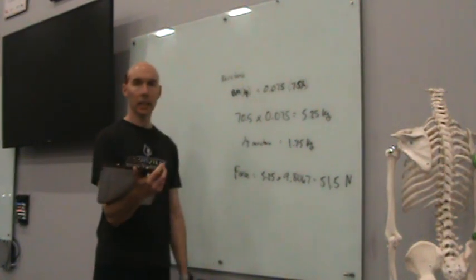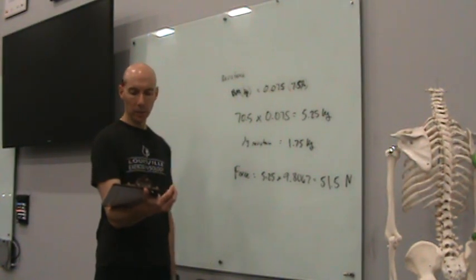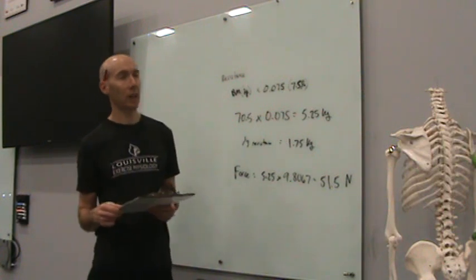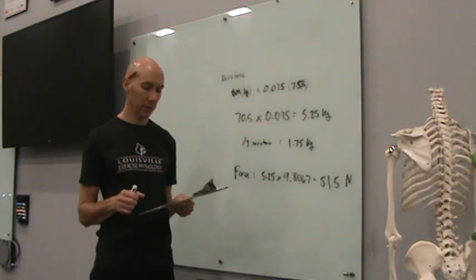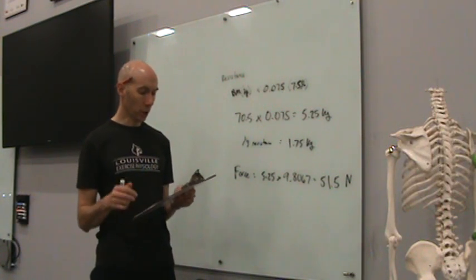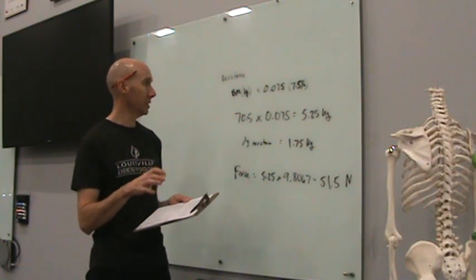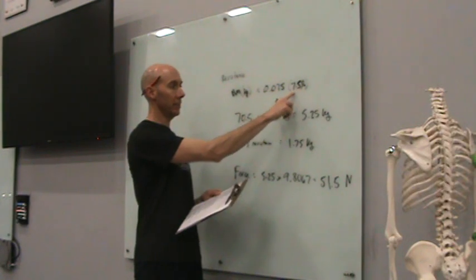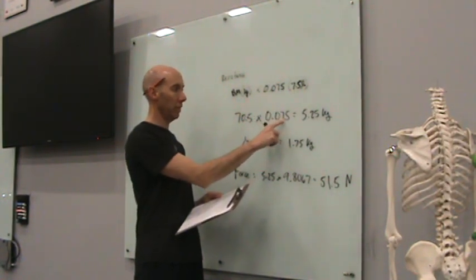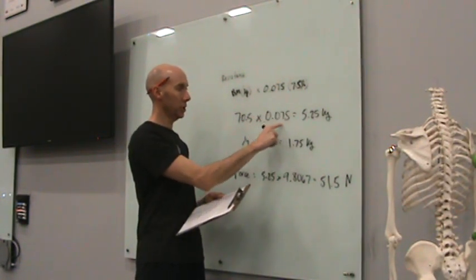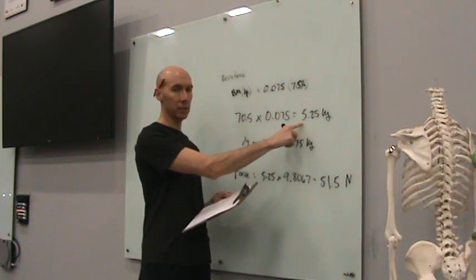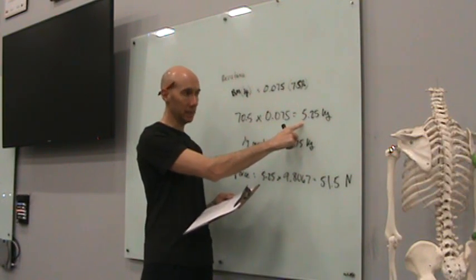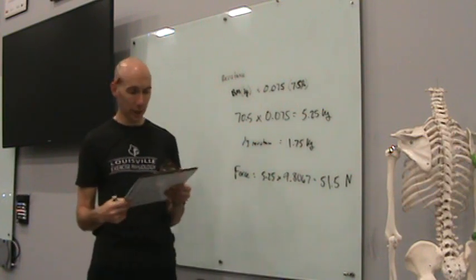Okay, so for the Wingate, again, Lindsay is going to be our subject. Her body weight is 70.5 kilograms, her height is 158 centimeters. So for the resistance, what we will do is take her body mass in kilograms and multiply it by 7.5 percent or 0.075. So that shows here. So the kilogram resistance that we will use during the test is 5.25 kilograms.